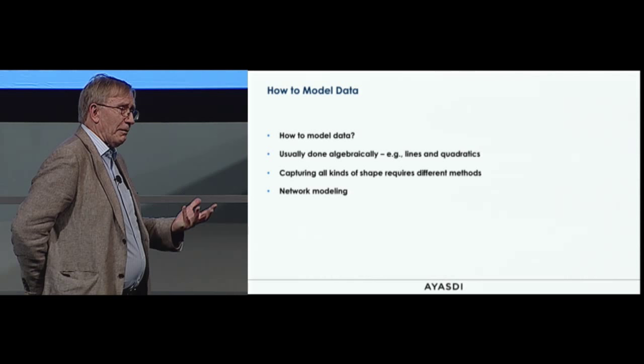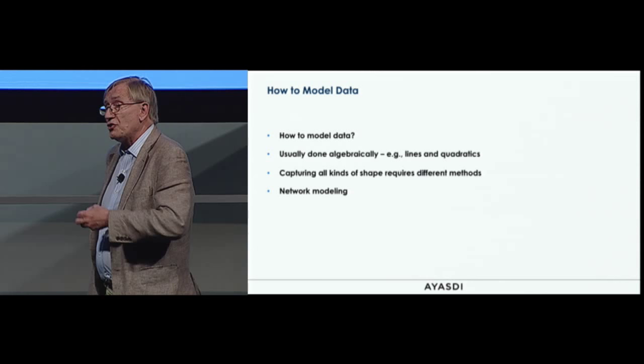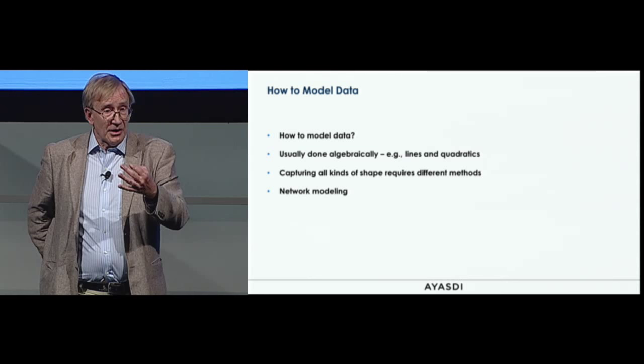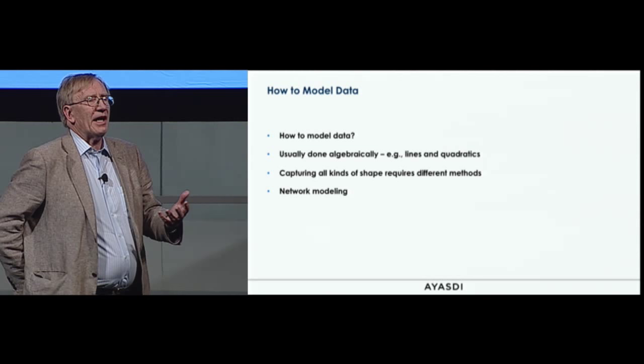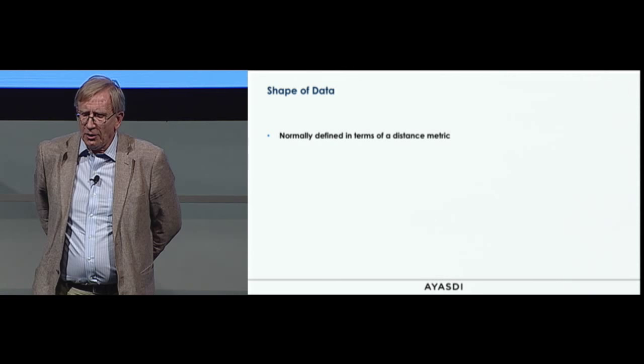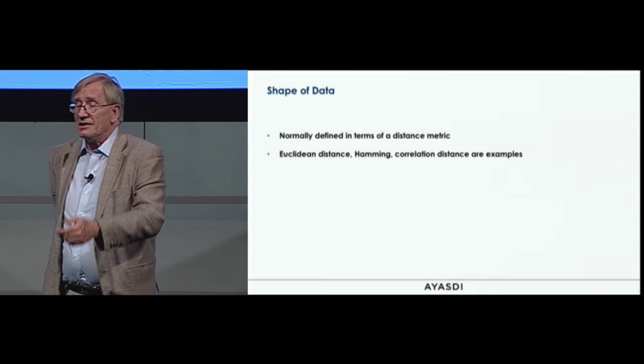Initially we were arriving at a point where we want to talk about network modeling of data — taking data which doesn't come in a network form and building a network model for it. A network is a collection of edges and nodes which one can lay out in the plane or in space and inspect and work with. So what is the shape of data?